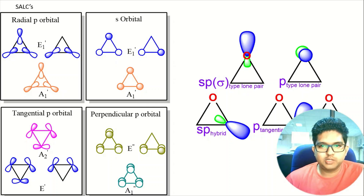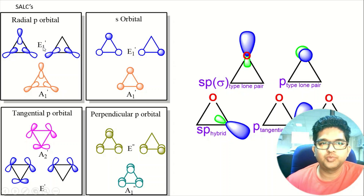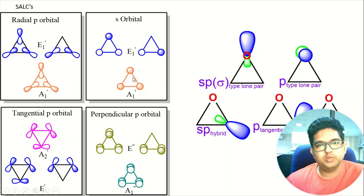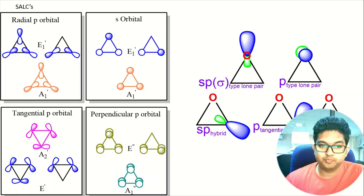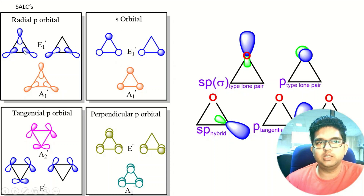What we observe is that the S orbital and the radial P orbital have the same symmetry — both are totally symmetric. Because they have the same symmetry, they mix and form SP hybridized orbitals. The beauty is that since both have the same symmetry, they will mix and generate SP hybridized orbitals coming from the S orbital and the radial P orbital of the three-membered ring. If we consider the tangential P orbital, that comes from SP hybridized mixing, and the perpendicular P orbital is also tangential in another sense.